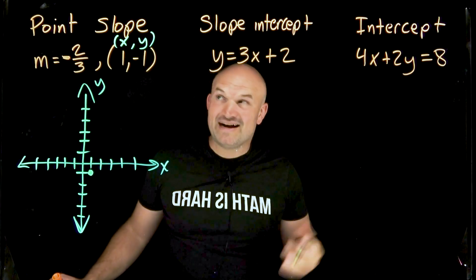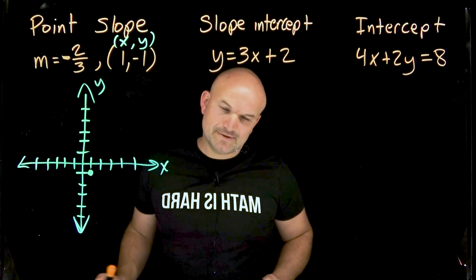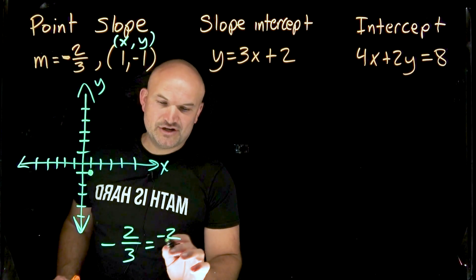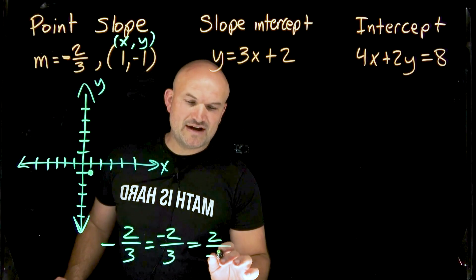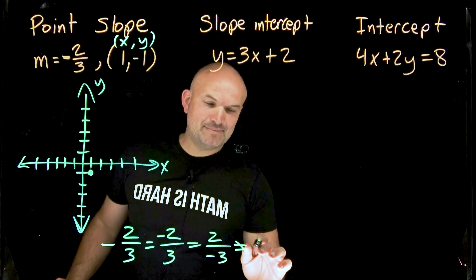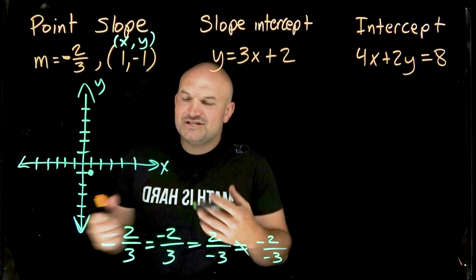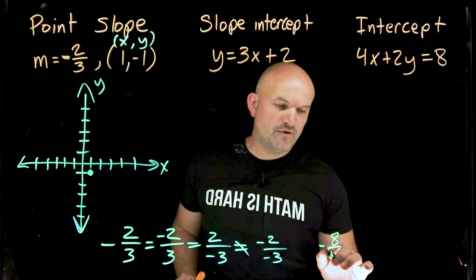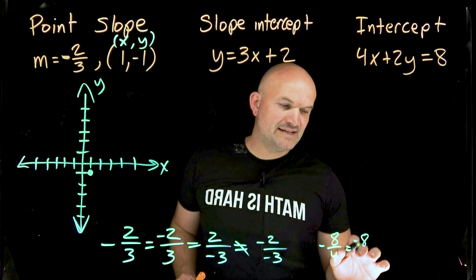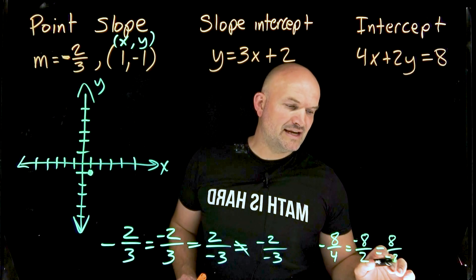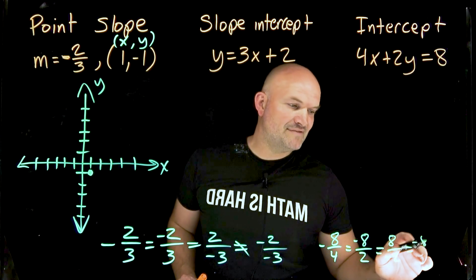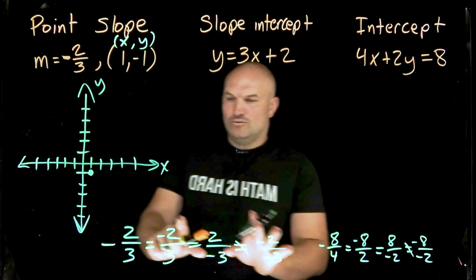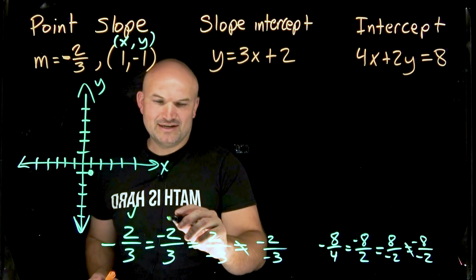Slope gets confusing when there's a negative. A key rule: negative two over three equals negative two divided by three, which equals positive two divided by negative three. However, negative two over negative three is not the same — it gives a positive result because the negatives divide out. For example, negative eight divided by negative two equals positive four. So be careful where you place the negative sign.